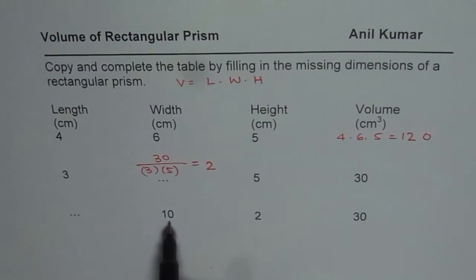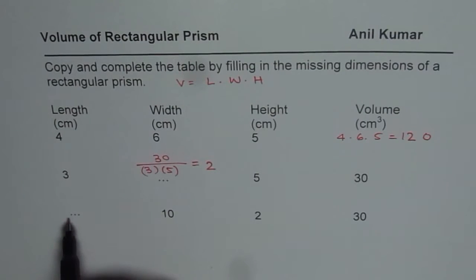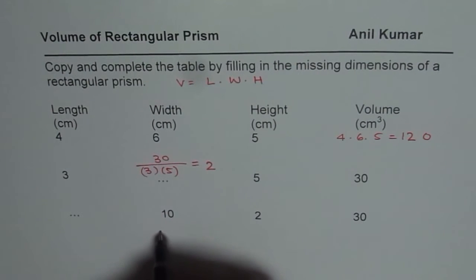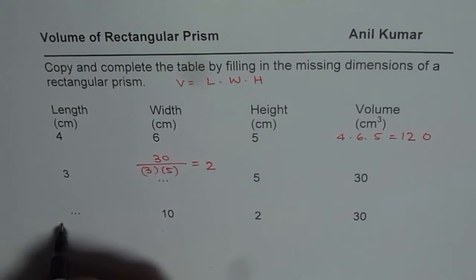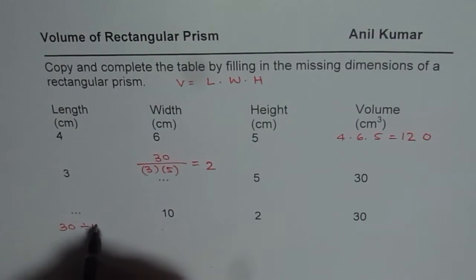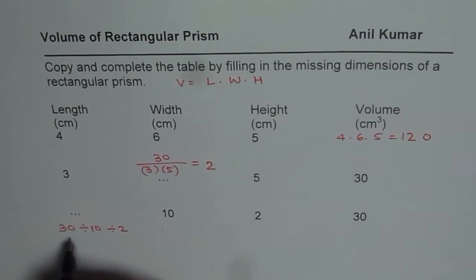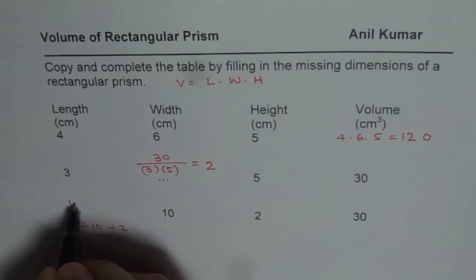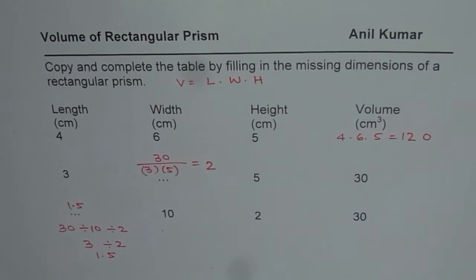In the last case, we have length which is missing. We know the volume is 30, so we divide 30 first by 10 and then by 2 to get our answer. 30 divided by 10 is 3, and 3 divided by 2 is 1.5. So in this case, the length should be 1.5.